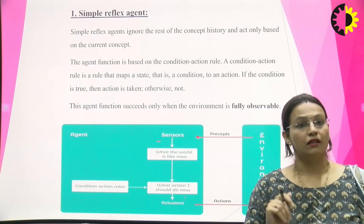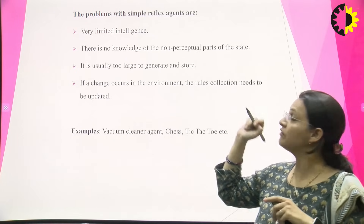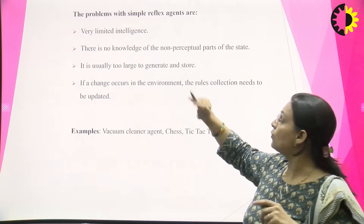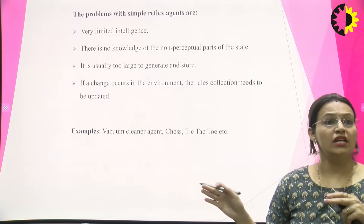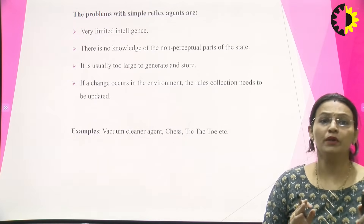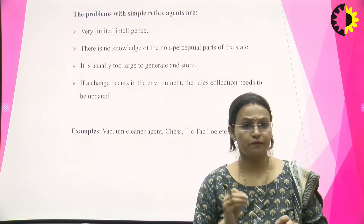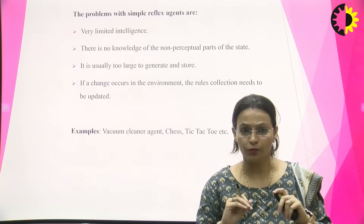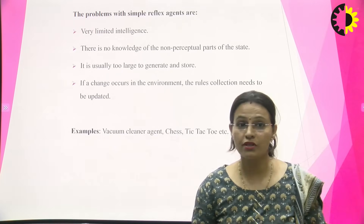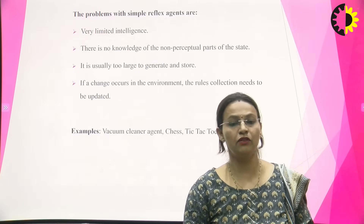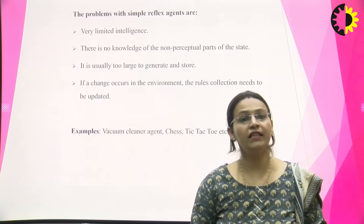There are certain problems with the simple reflex agent. It has limited intelligence, no knowledge of the non-perceptual part of the state, it is usually too large to generate and store, and if a change occurs in the environment the rule collection needs to be updated. For example, if there is no person in the room and the AC is still sensing high temperature, it will switch on — wasting energy. Also, aged people may not need the AC switched on as frequently as young ones, but the agent has been trained a fixed way, so it will switch on regardless.